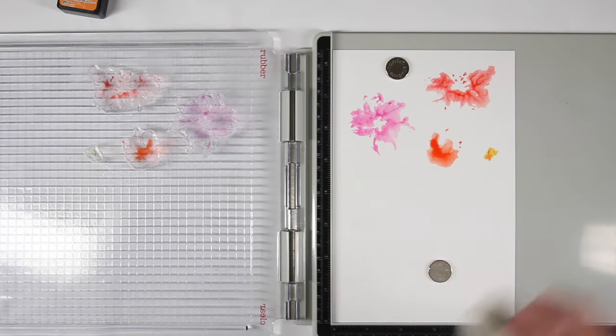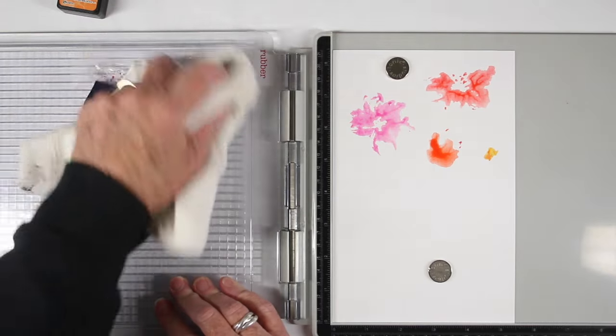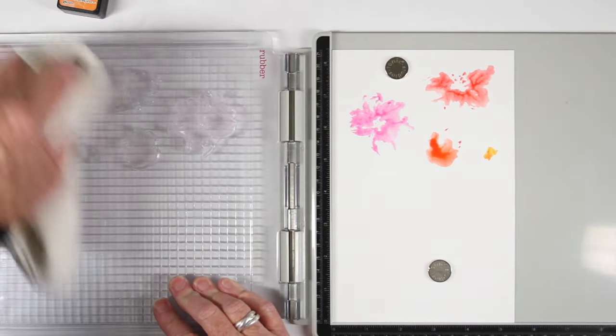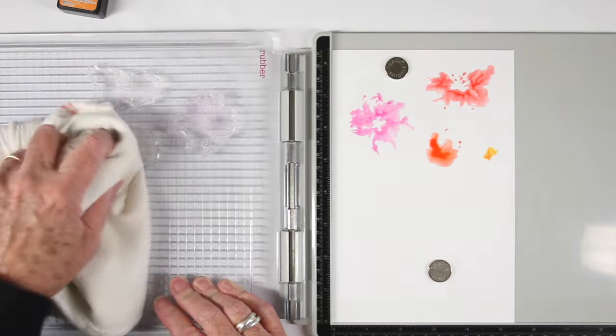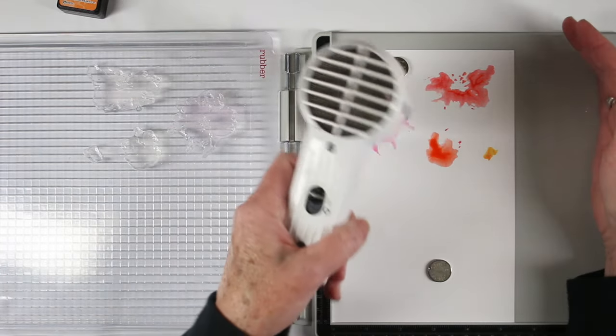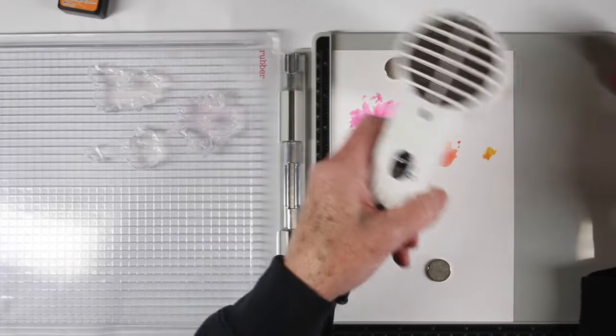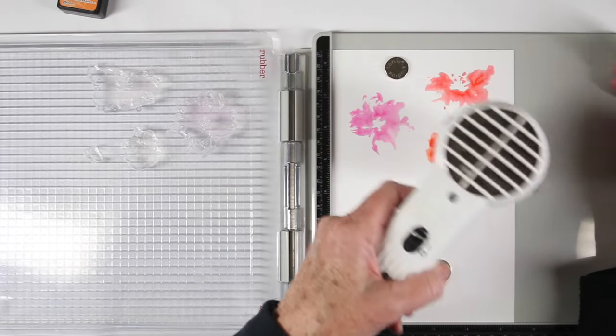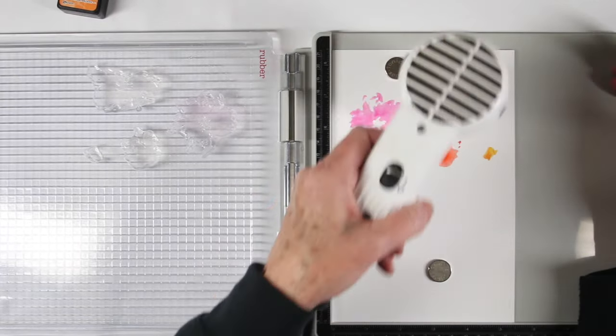So I like to go ahead and clean off my platform and also clean off my stamps before I add my second layer of ink. I don't want to add any extra water to the ink pad. At this point you can let them air dry or use your craft tool to go ahead and dry the ink up but do leave everything in place on the platform.